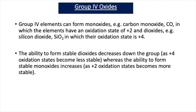Because Group 4 elements can exhibit either a plus 4 or plus 2 oxidation state, it's possible to have monoxides and dioxides. Carbon monoxide is an example of a monoxide of Group 4 with formula CO, and carbon is in the plus 2 oxidation state. Silicon dioxide SiO2 is an example of a dioxide where silicon is in the plus 4 oxidation state. The ability to form stable dioxides decreases down the group, whereas the ability to form stable monoxides increases down the group due to the increased inert pair effect.